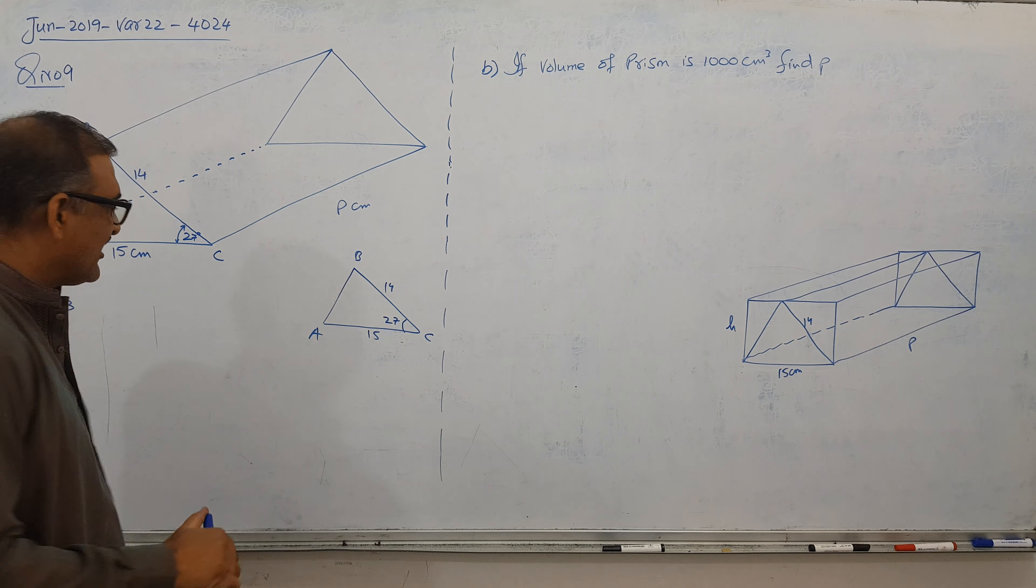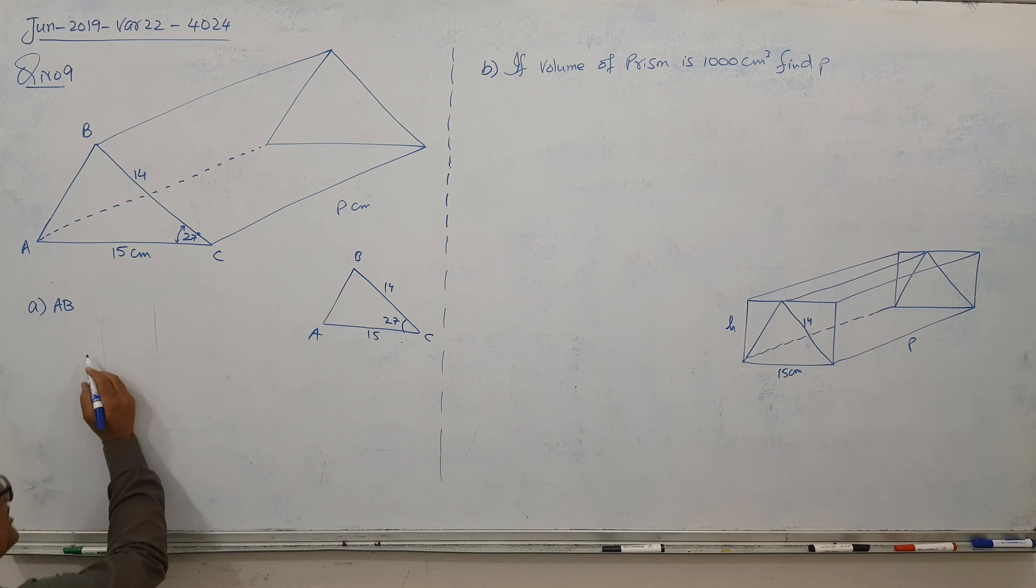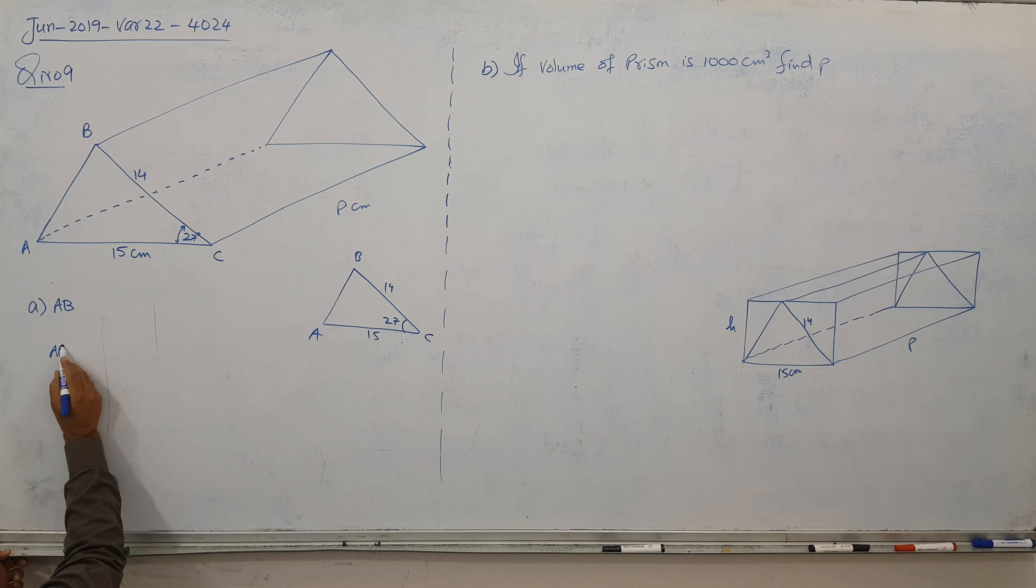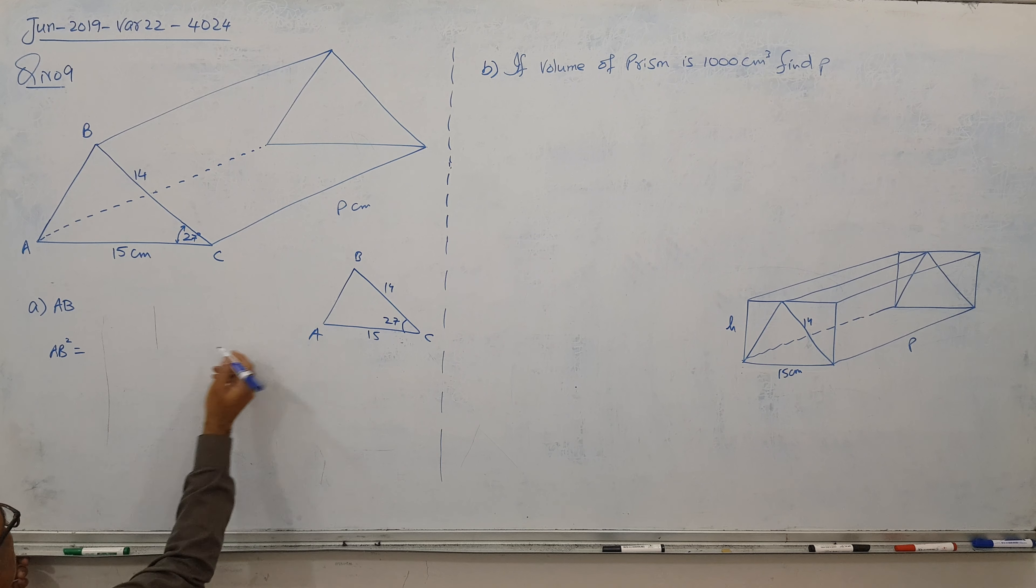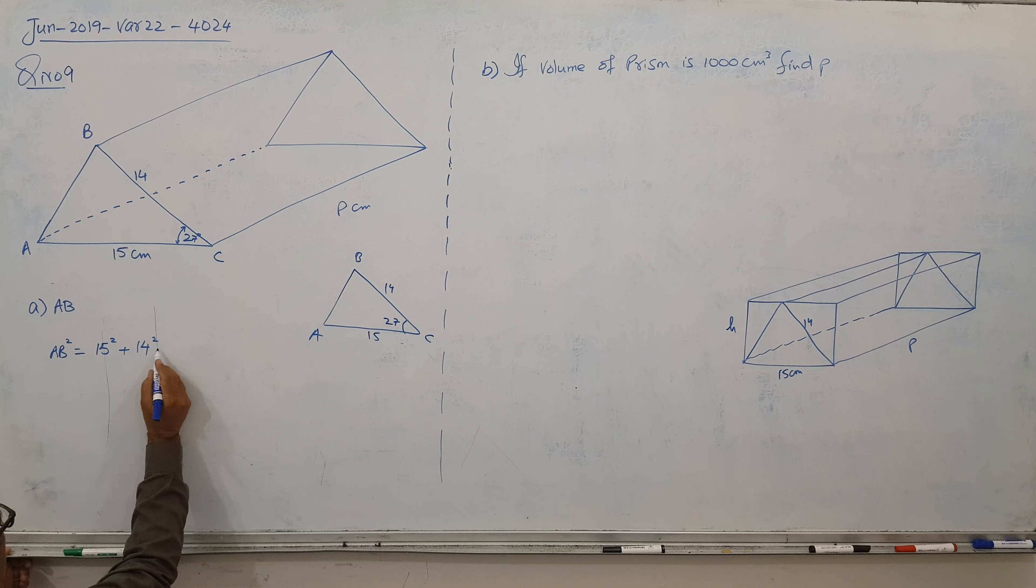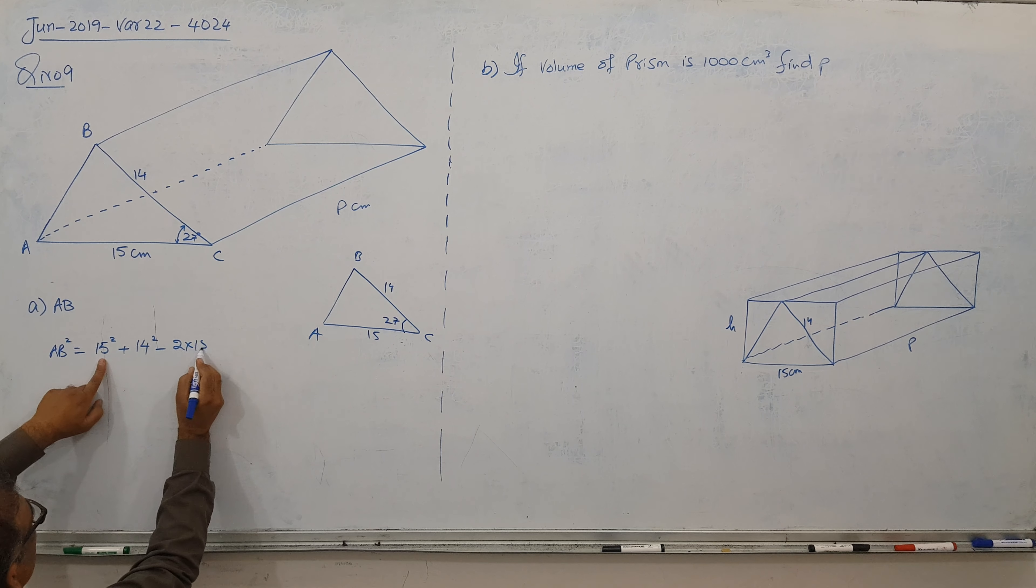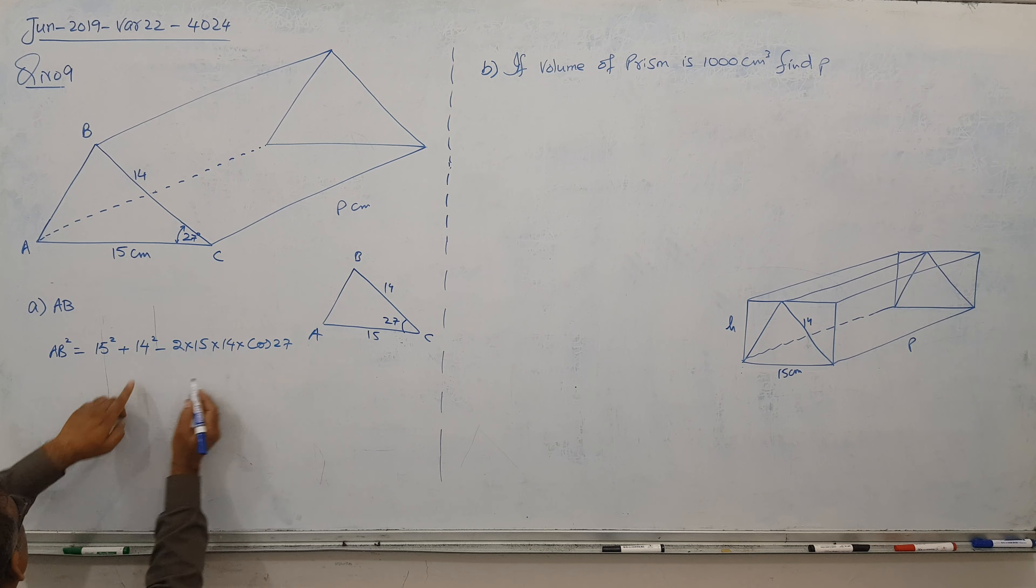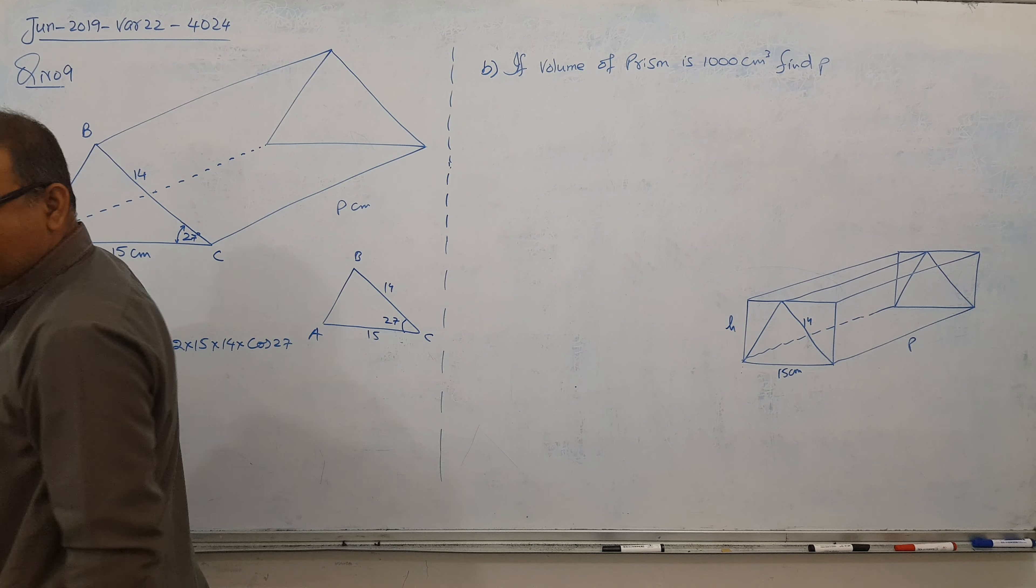So cosine rule says, in front of what? This is AB. So AB squared equals 15 squared plus 14 squared minus 2 into 15 times 14 times cosine of the angle between them. So let's find the answer.